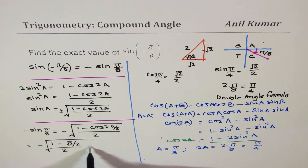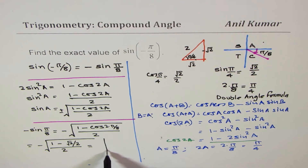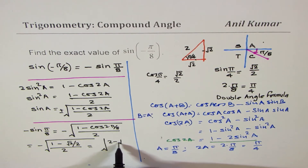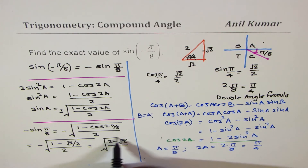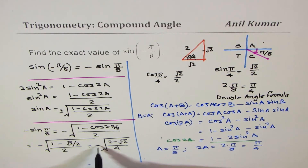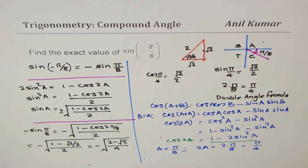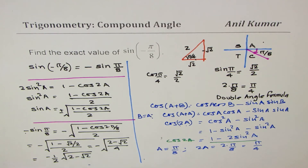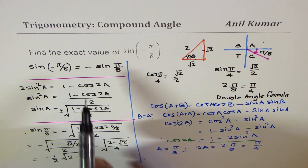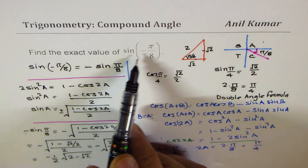Substituting: we get − √((1 − √2/2)/2). Taking the common denominator gives − √((2 − √2)/4), which simplifies to −(1/2)√(2 − √2). So that becomes the exact value for sine of negative π/8.